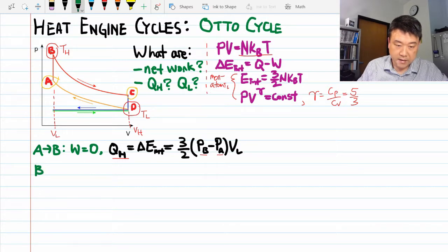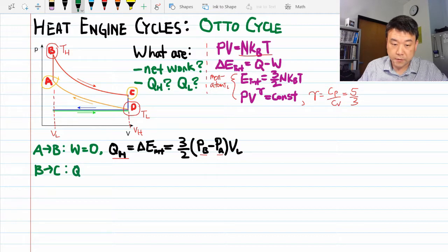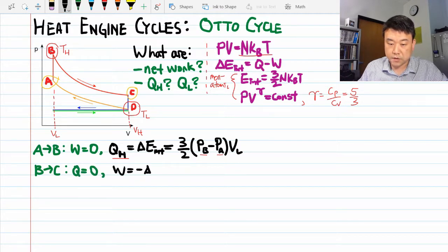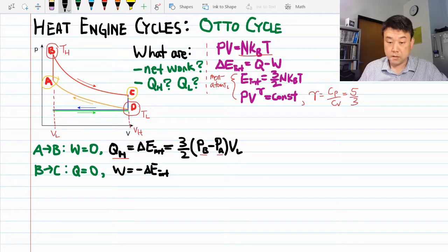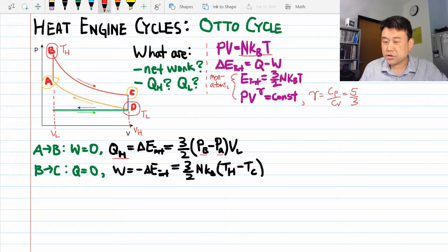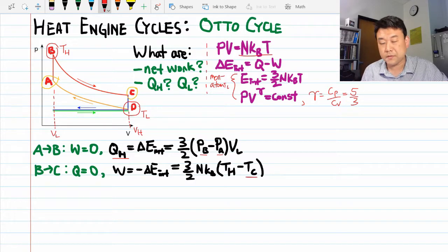Process B to C. That's adiabatic expansion. So adiabatic means no heat transfer. And the work done is minus of the change of internal energy. Let me express this one in terms of temperatures. Making sure I'm not making any sign errors. This is positive as it's supposed to be. And this TC is an additional unknown I'm introducing that we're going to have to eliminate later.